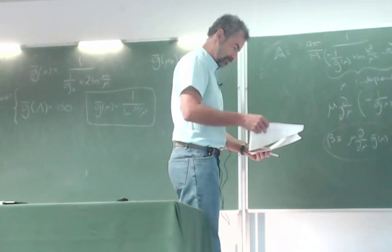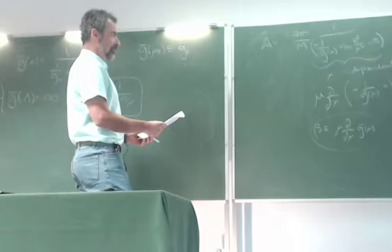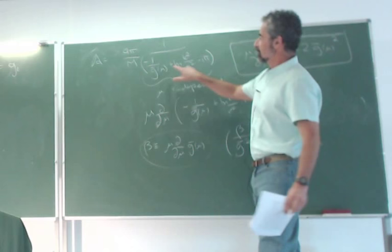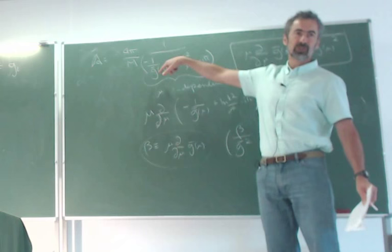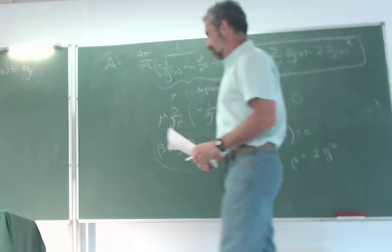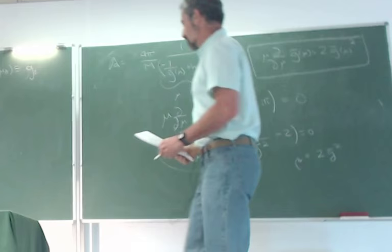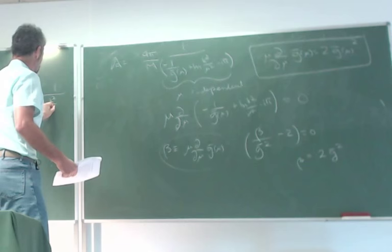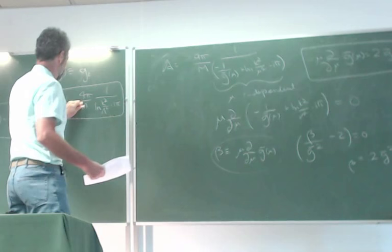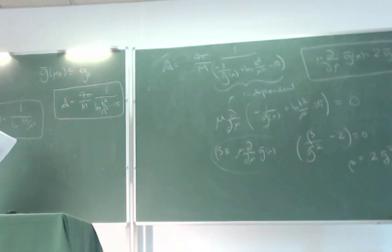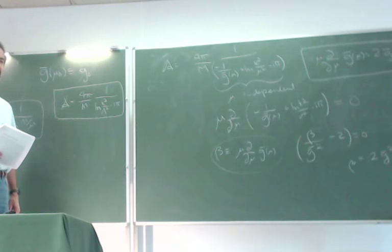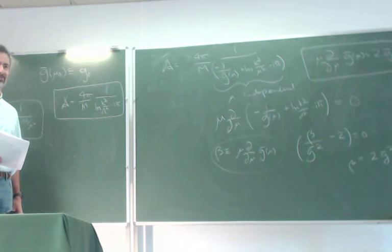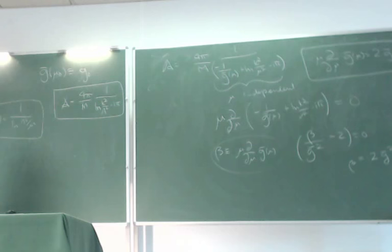Going back to the amplitude and setting μ = λ, since 1/ḡ(λ) = 1/∞ = 0, we get: amplitude = (4π/M) × [log(k²/λ²) − iπ]^(−1). A student asks about the condition: the special scale λ was where the cotangent of δ vanished — but cotangent δ = 0 corresponds to δ = π/2, not δ = 0. That is where the resonance occurs. Good question.